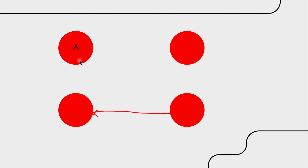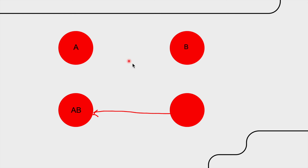There are four different scenarios that can happen. A person can have the A antigen, a person can have the B antigen, or they can have both A and B — in that case we name them AB. And if a person does not have either the A or B antigen, we name them as O.